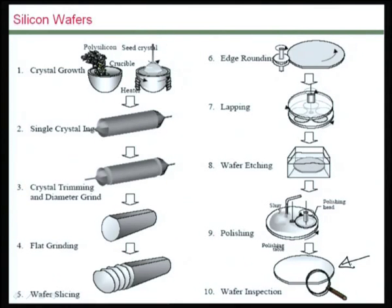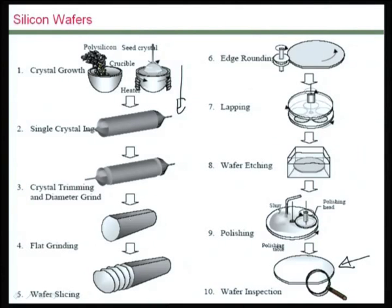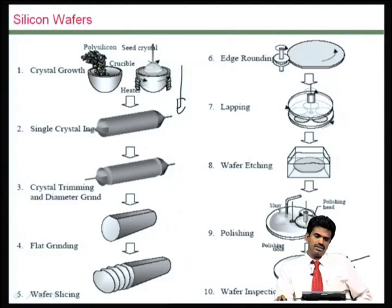It is absolutely critical that at this stage the crystal orientation of the silicon is defined. Further on, it is shaped, the identifying flats are engraved on it, then it is sliced into individual wafers and polished to a mirror finish. Finally, it is inspected and provided to us for processing to build various microsystems and ICs.